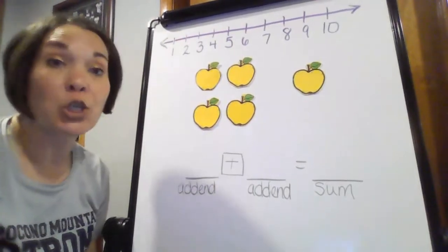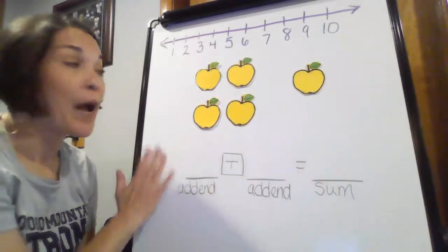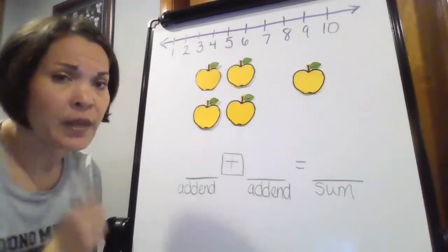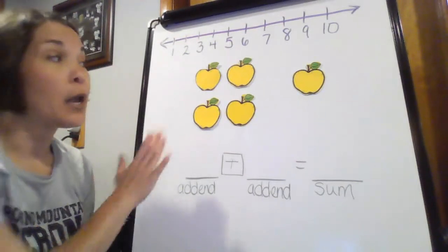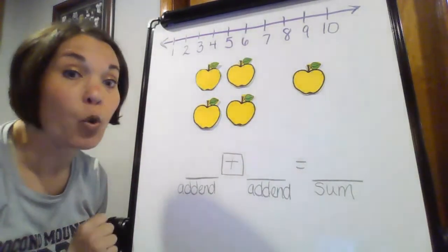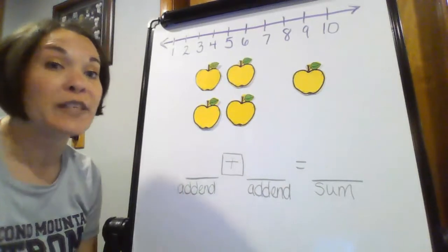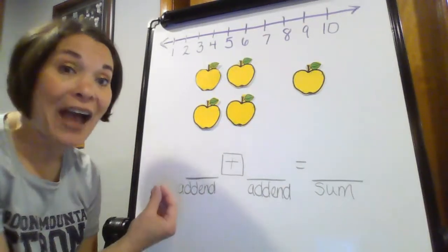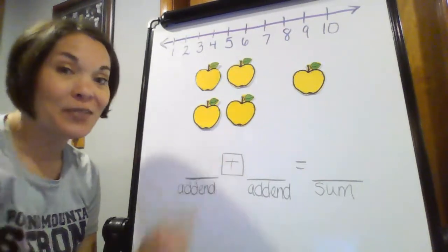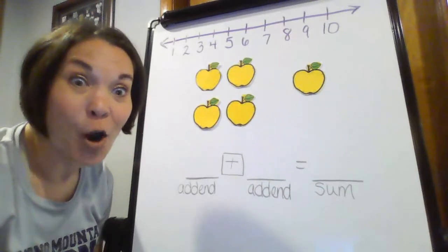So, what I want to do is I want to make a number sentence to talk about my picture. But first, if you remember my story, Anna went to the apple orchard, picked four, and then picked one more. If you heard me say that word more, I like to call that a clue word. Clue words help me decide if I'm going to be adding or subtracting. Since I said more, I'm going to be adding. So, let's go ahead and make our number sentence.